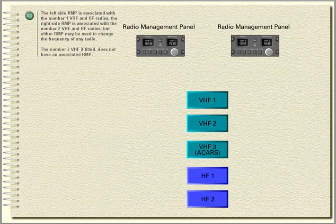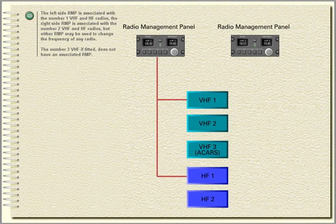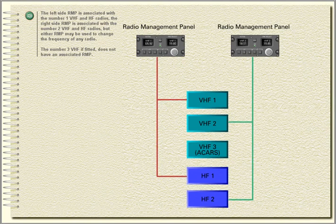Radio Management Panel. Two radio management panels are located on the centre pedestal. Their only function is to change the frequency of any of the VHF or HF radios. The left side radio management panel is associated with the number one VHF and HF radios; the right side radio management panel is associated with the number two VHF and HF radios. However, either radio management panel may be used to change the frequency of any radio.